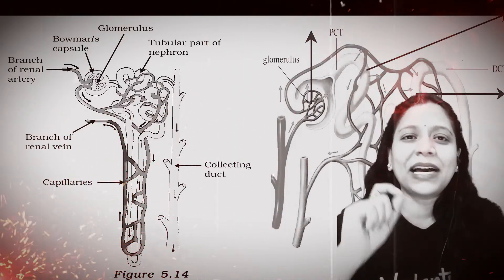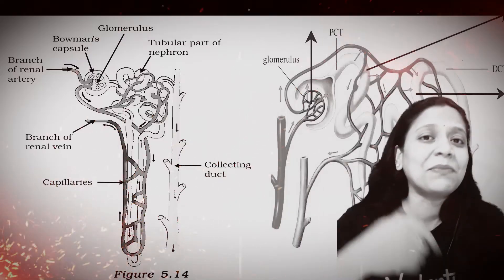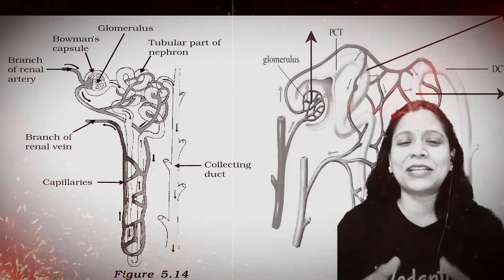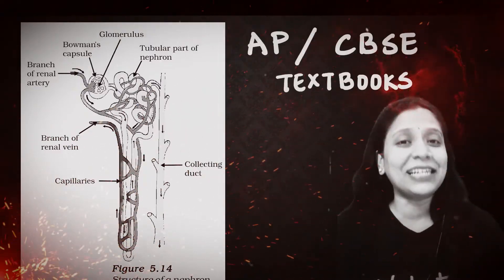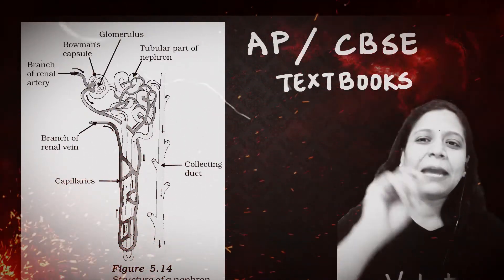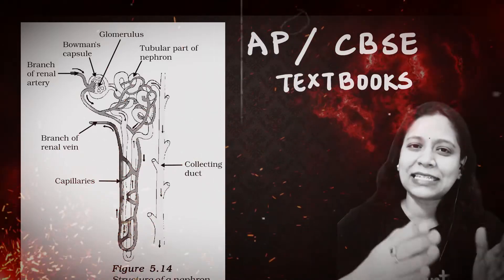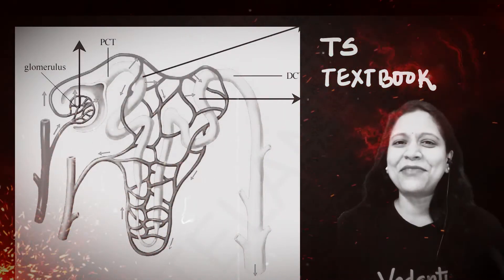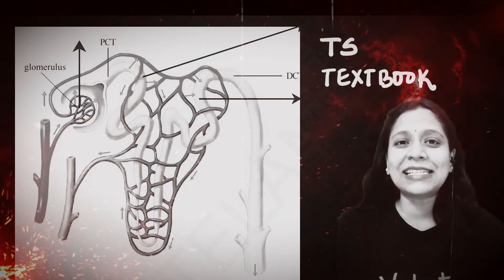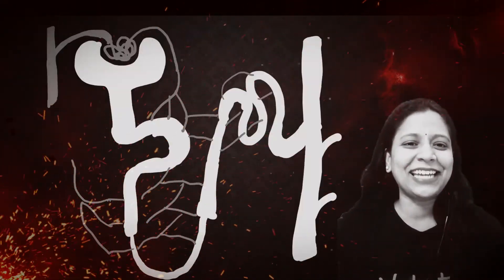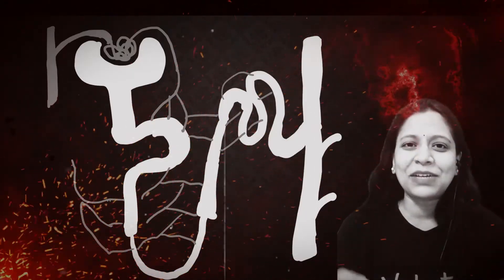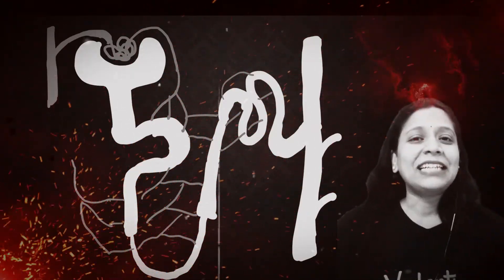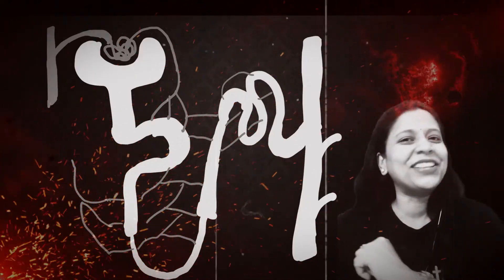If you want to draw this nephron diagram, you will find it one of the easiest diagrams in biology. In the control and coordination chapter of AP and CBSE textbooks, this diagram is there. For an essay question worth 8 marks, the nephron diagram is worth 4. So let's dive into an easy way to draw this diagram.